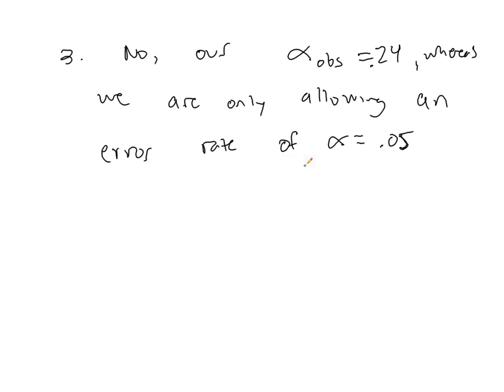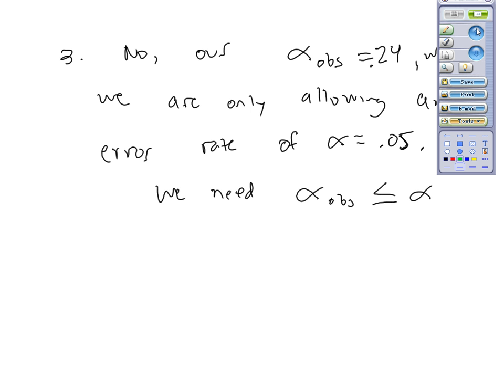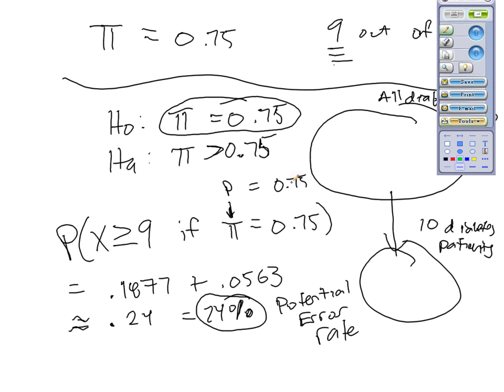So, we would need the likelihood of what we got, or more extreme, to be 5% or less. We need our alpha observed to be less than or equal to our chosen alpha. If it's not, then there's a high probability that we could just make an error that really what we're observing, this 9 out of 10, is just due to sampling variability.